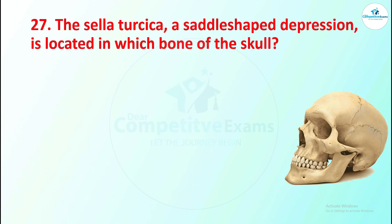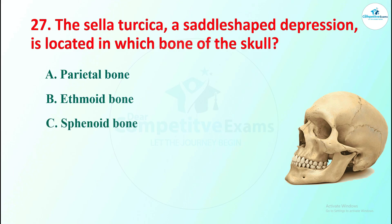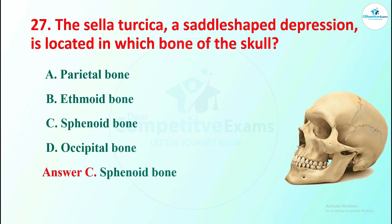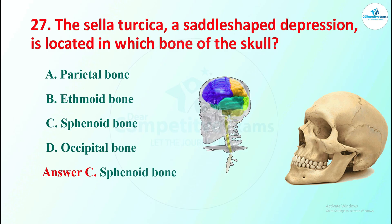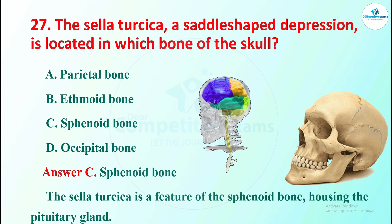Question 27: the sella turcica, a saddle-shaped depression, is located in which bone of the skull? Options are parietal bone, ethmoid bone, sphenoid bone, or occipital bone. The right answer is sphenoid bone. The sella turcica is a feature of the sphenoid bone, housing the pituitary gland.